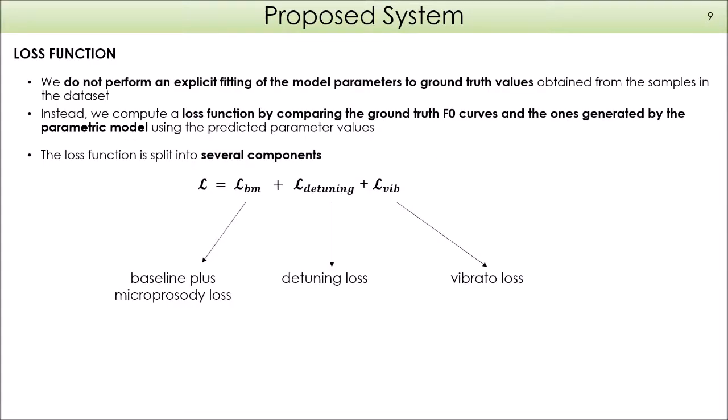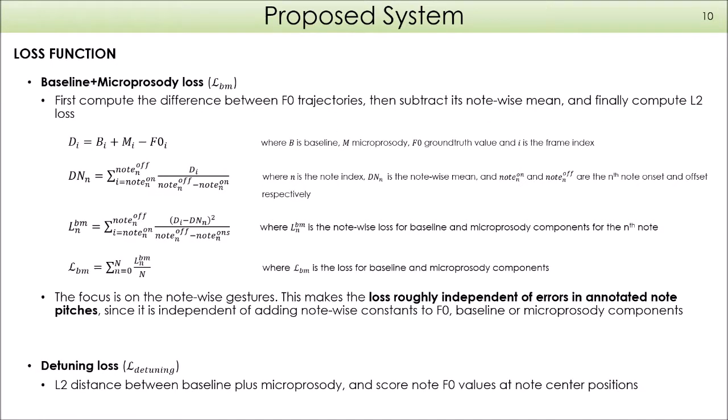Now let's talk about the loss function used for training the model. Since we don't have ground truth values for the parametric model for the samples in the dataset, we compute the loss function by comparing the ground truth F0 values and the F0 generated by the network. We divide the loss function into three components: the baseline and microprosody loss, the detuning loss, and the vibrato loss.